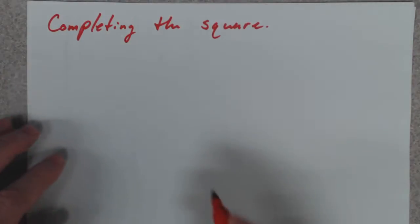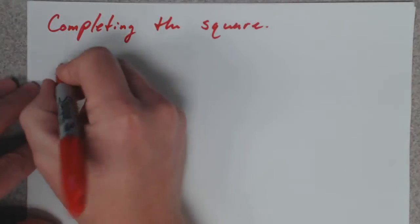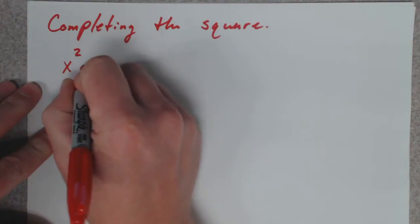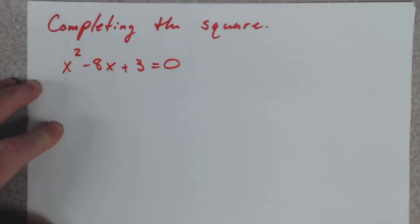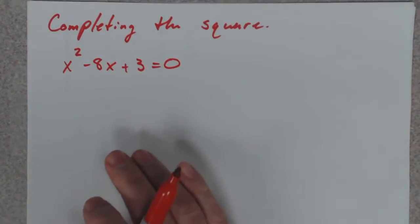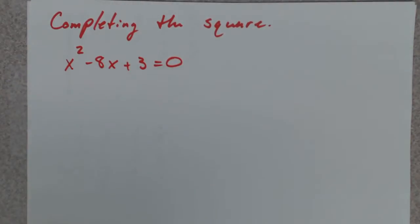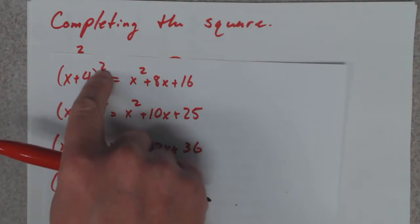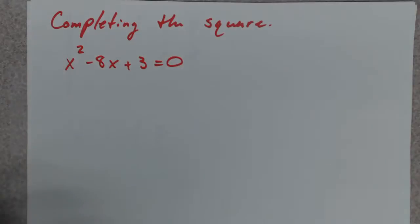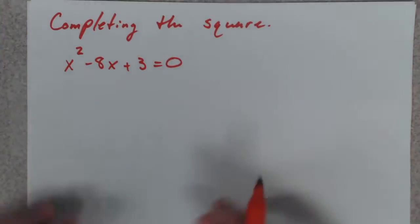So let's say, for instance, you've got an equation like x squared minus 8x plus 3 equals 0. And we want to rewrite this to use one of these kind of looking guys: x plus something squared or x minus something squared. That's what completing the square kind of deals with. So here's what you do.